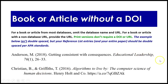The second example: published in 2016, titled 'Algorithms to Live By: The Computer Science of Human Decisions,' written by B. Christian and T. Griffiths, published by Henry Holt and Co. Located at a URL because there wasn't a DOI available for that one.